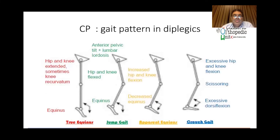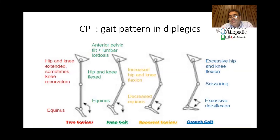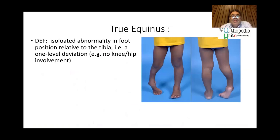Regarding CP gait patterns: true equinus is when you have only equinus of the foot with normal hip and knee — this is very rare in CP diplegics, more commonly seen in hemiplegics. The most common pattern is jumper gait, with equinus deformity at the ankle, knee flexion, and hip flexion and abduction. Apparent equinus is the second most uncommon. Crouch gait is a very tiring problem for children, typically iatrogenic following excessive lengthening of the tendo-Achilles with short hamstrings, leading to dorsiflexion at the ankle, flexion at the knee, and flexion at the hip.